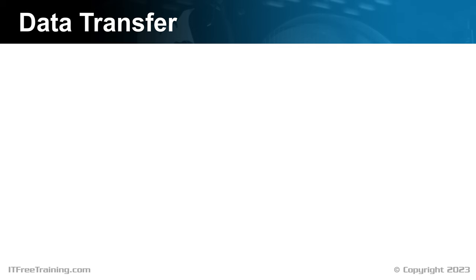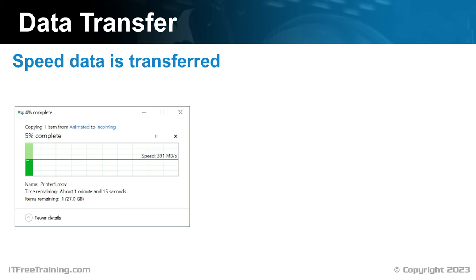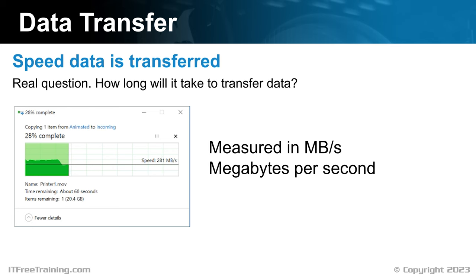The first performance factor that I will consider is data transfer. This is essentially the speed data is transferred at. To understand this, consider that you are copying a file in Windows. When looking at the specifications for a solid state drive, there are a lot of specifications that will give you an indication of how fast the solid state drive is. The real question you should be asking is how long will it take to transfer data? The measurement normally used is megabytes per second. You will notice that the transfer rate starts high and as time goes on, the transfer rate slows down.